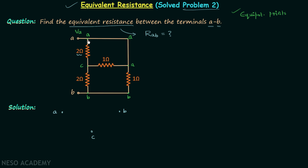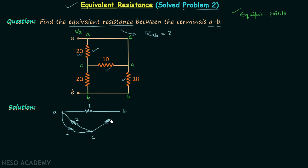Now focus on the 2-ohm resistor — it is between A and C. So we place one resistor between A and C having the value 2 ohms, and put a tick mark to indicate we're done with it. Moving further, we have a 1-ohm resistor between C and A, so we place that next. Then we have a 1-ohm resistor between A and B, and finally a 2-ohm resistor between C and B.